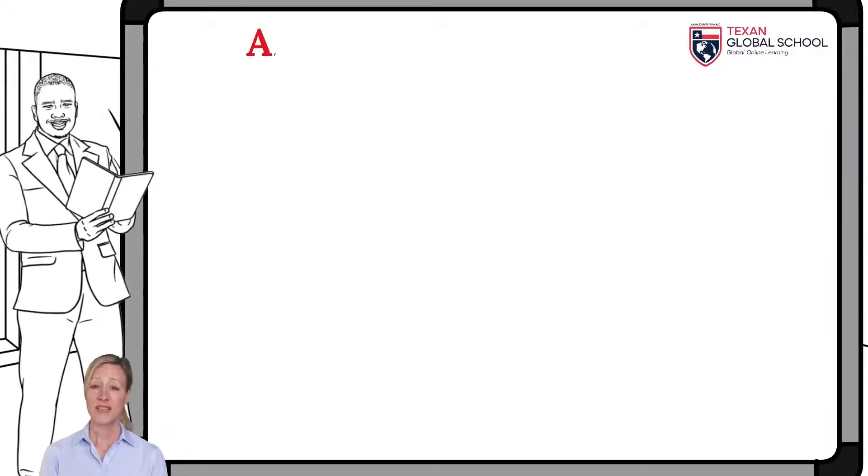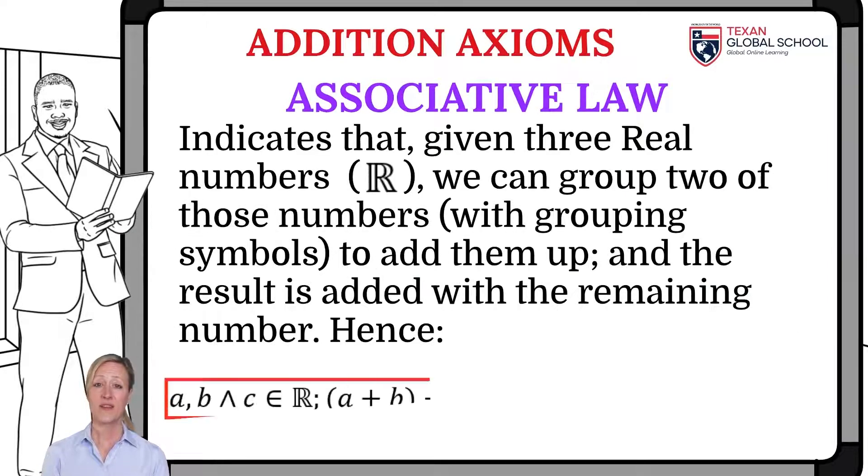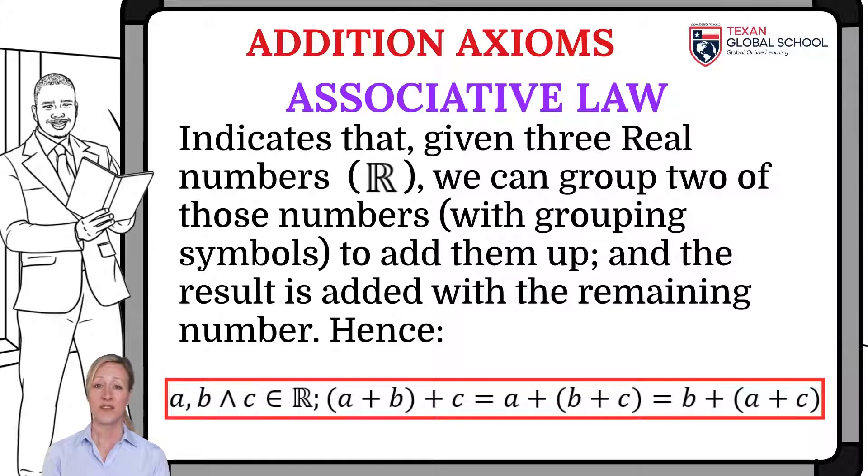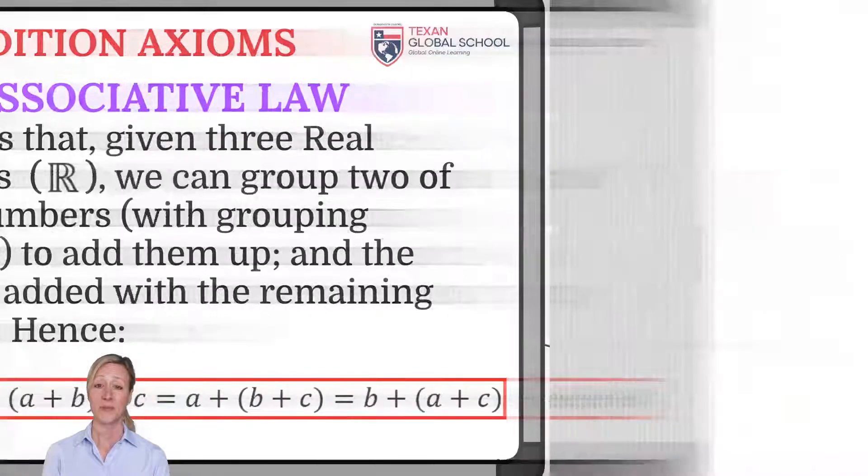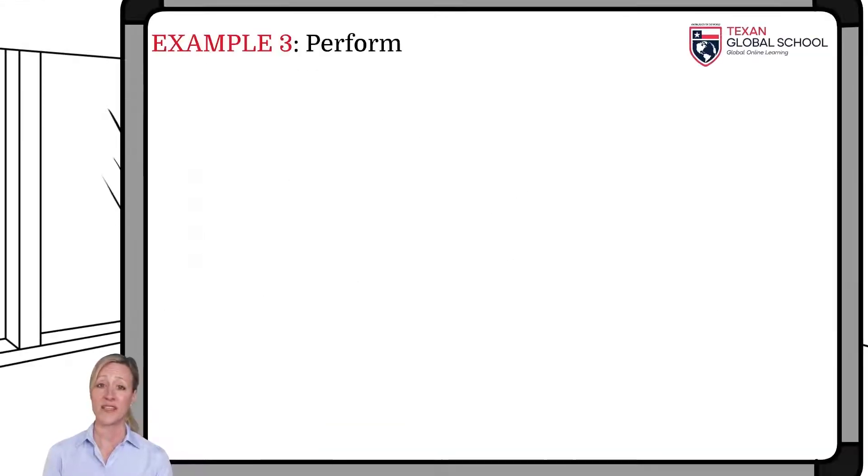The associative law indicates that, given three real numbers, we can group two of those numbers, with grouping symbols, to add them, and the result is added with the remaining number. Let's look at an example.